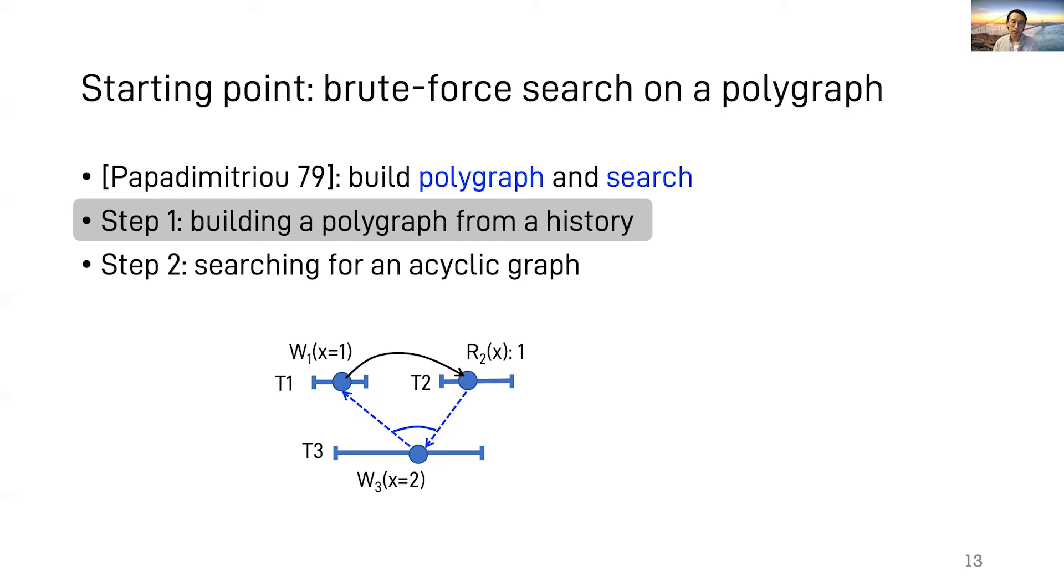Now this is a polygraph, where each vertex is a transaction and each edge is a known happen-before relationship. In addition, a polygraph has a set of what we call constraints that represent all the unknown but possible happen-before relationships. In this example, there's one constraint which reads as either T3 happened before T1 or T2 happened before T3.